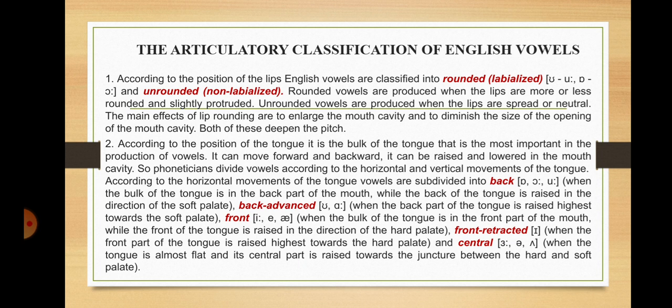According to the position of the tongue, it is the bulk of the tongue that is most important in the production of vowels — it can move forward and backward, and can be raised and lowered in the mouth cavity. Phoneticians divide vowels according to horizontal and vertical movements of the tongue. According to horizontal movements, vowels are subdivided into: back, when the bulk of the tongue is in the back part of the mouth raised toward the soft palate; back advanced; front, when the bulk of the tongue is in the front part raised toward the hard palate; front retracted; and central, when the tongue is almost flat with its central part raised toward the juncture between the hard and soft palate.